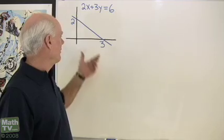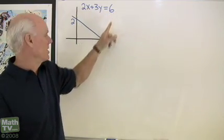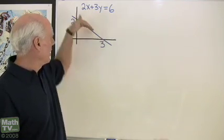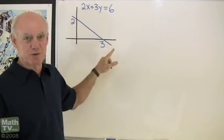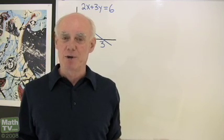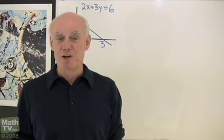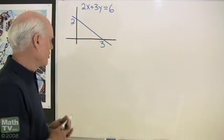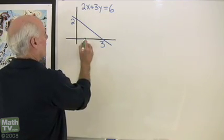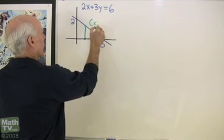Let's talk about the area under a curve. I've drawn up the straight line 2x plus 3y is equal to 6. You see it crosses the x-axis at 3 and the y-axis at 6. I want to find the area under this curve between x equals 0 and x equals 3.